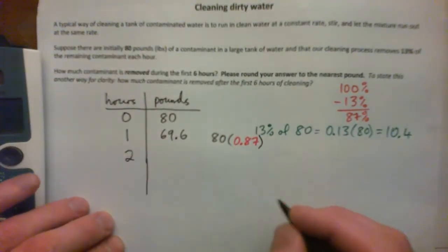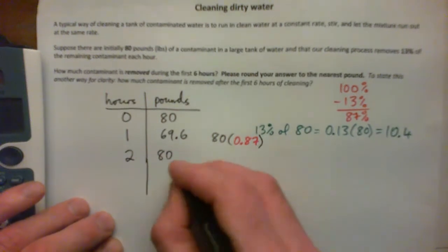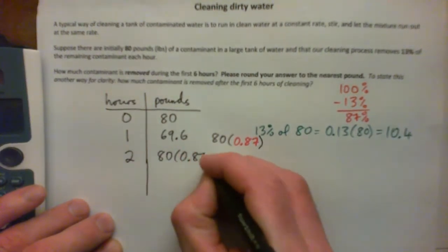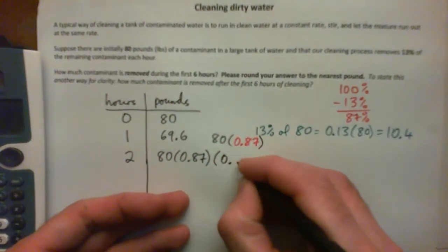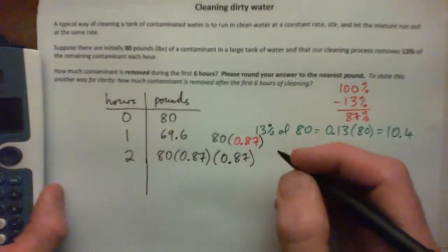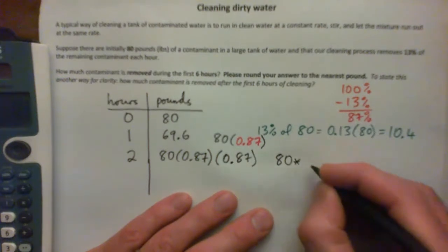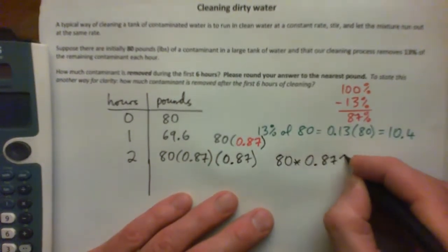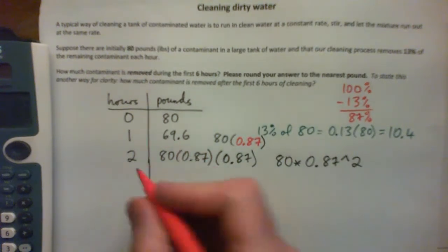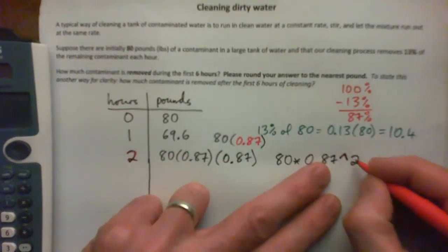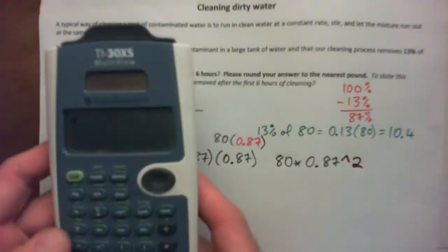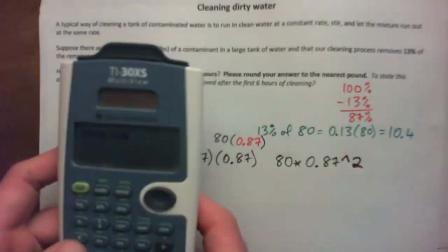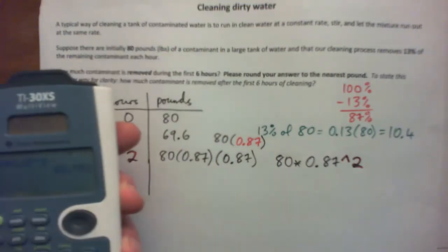And after two hours, we started with 80 pounds, times it by 87% to get what's left after one hour. Then to get what's left after two hours, just times it by 0.87 again. So that is simply 80 times 0.87 to the power of 2. That gives about 60.6 pounds left after two hours.